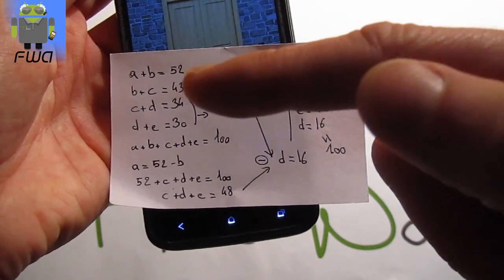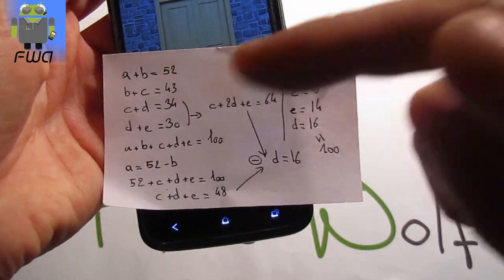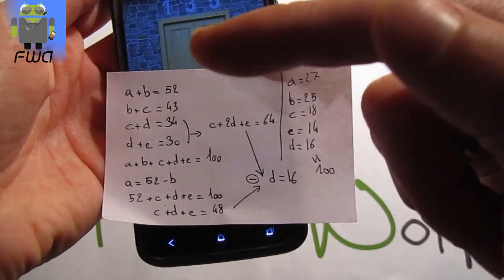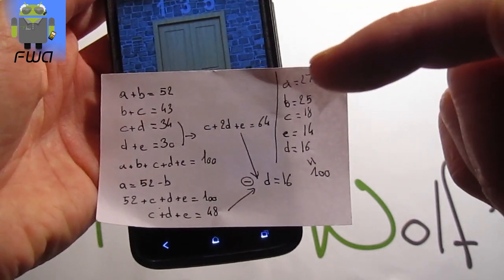We also get with this one 18 plus b equals 43, so b equals 25. And a plus b equals 52. A equals 27.